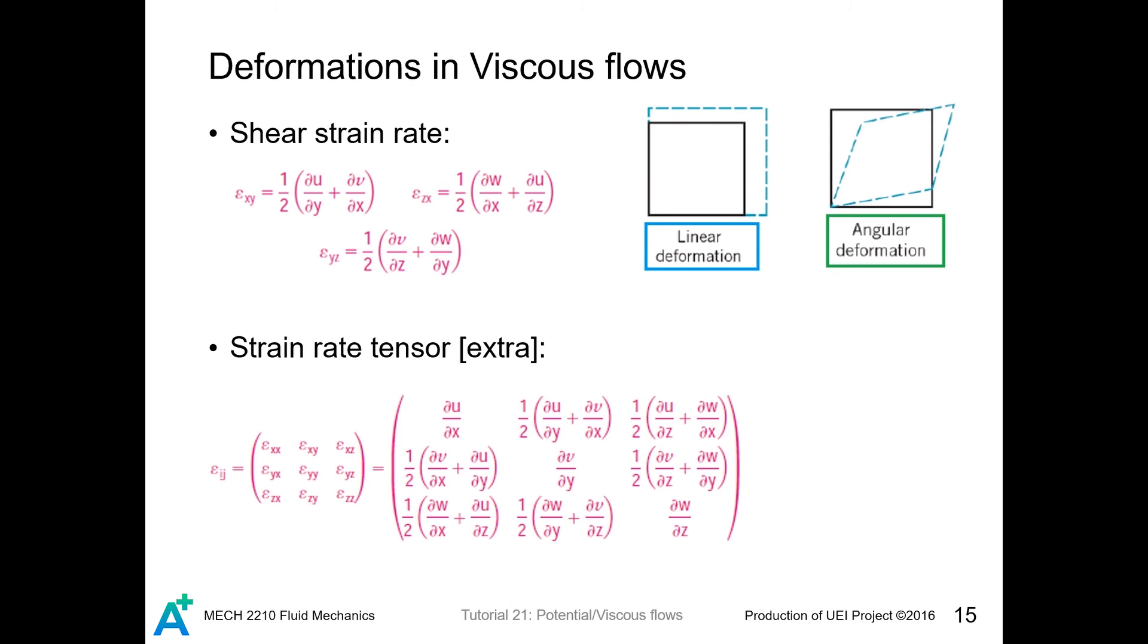Now we start to talk about viscous flows. Different from all the flows we consider in this chapter, we start to deal with viscosity. We have mentioned the definition about shear strain rate in the previous video already. So here is a tensor that describes all the deformation rate. The non-diagonal elements are just the angular deformations, and the diagonal terms here are the linear deformations. What's so special about a tensor is that a tensor must be symmetric and have many other properties that it has to fulfill.